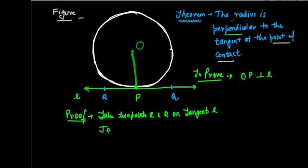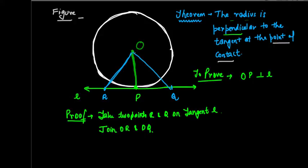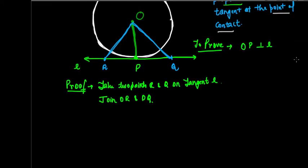Now join OR and OQ — we are going to join R to the center O, and also join O to Q, that is the center to point Q. So I joined O to R and O to Q. Now consider OR, OP, and OQ.